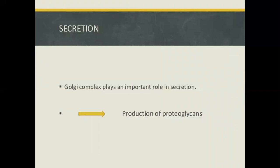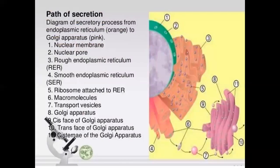The Golgi complex plays an important role in secretion, including the production of proteoglycans. The secretory process path goes from the endoplasmic reticulum (orange) to the Golgi apparatus (pink), involving the nuclear membrane, nuclear pore, rough endoplasmic reticulum and smooth endoplasmic reticulum.